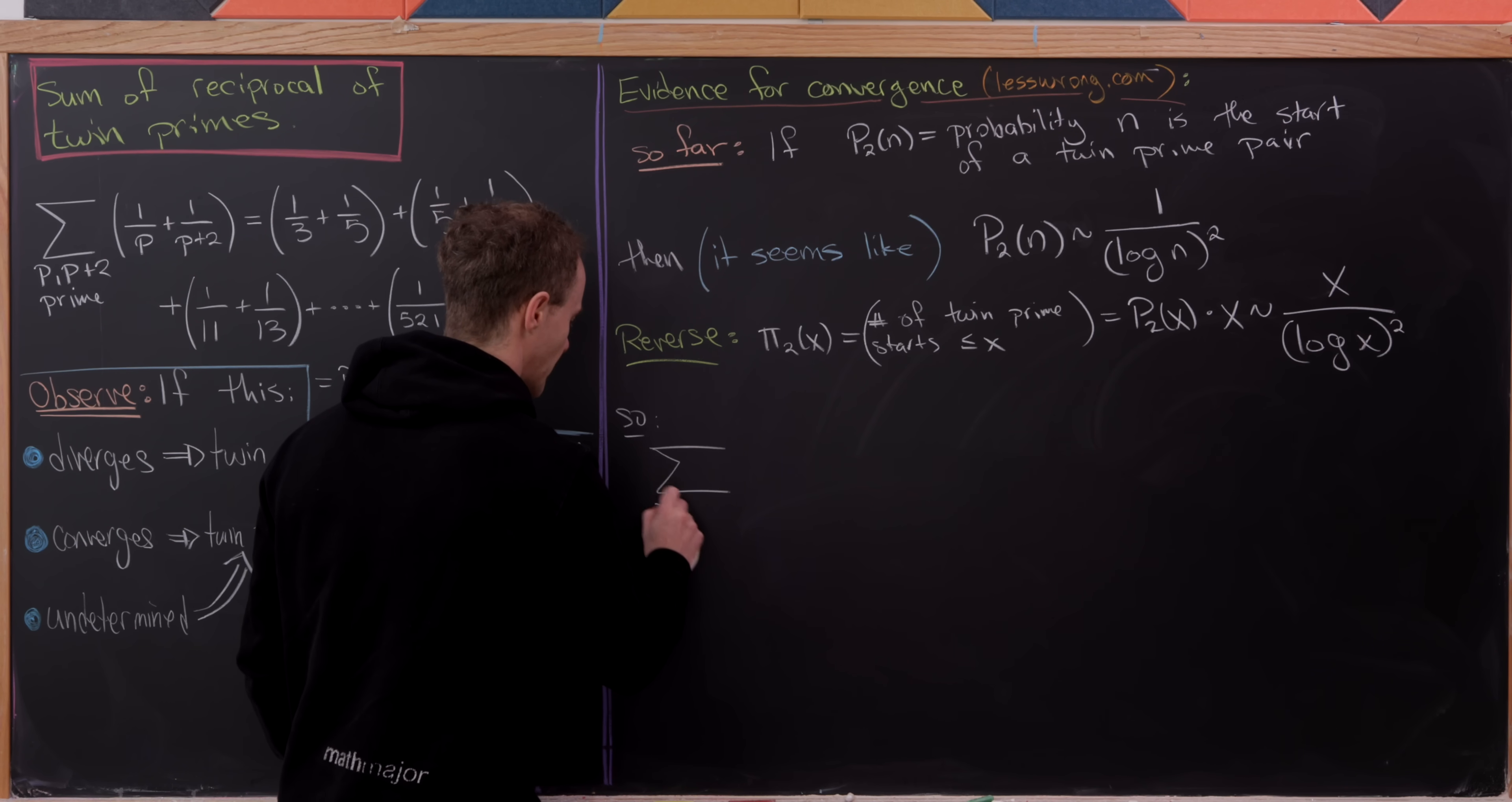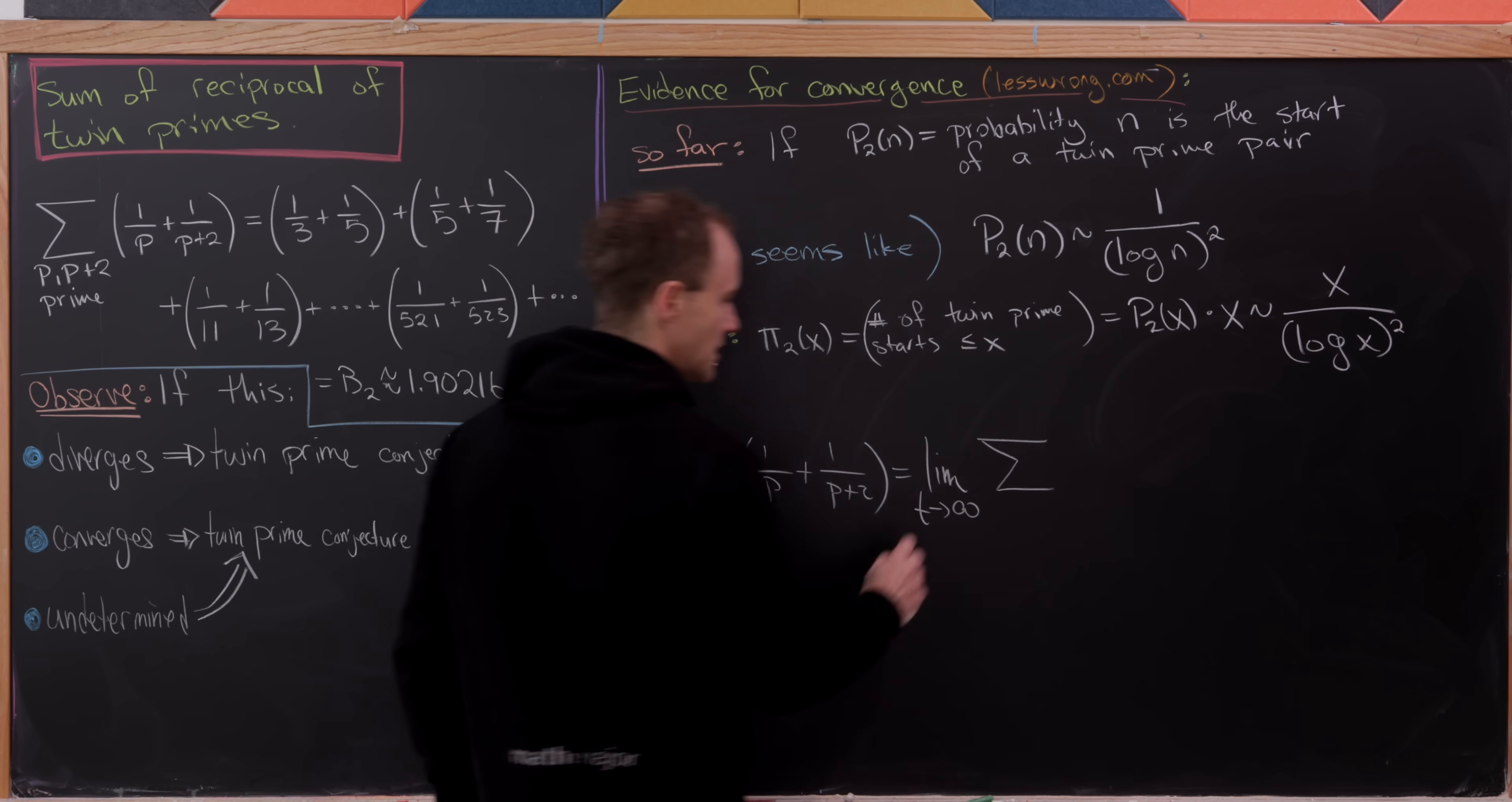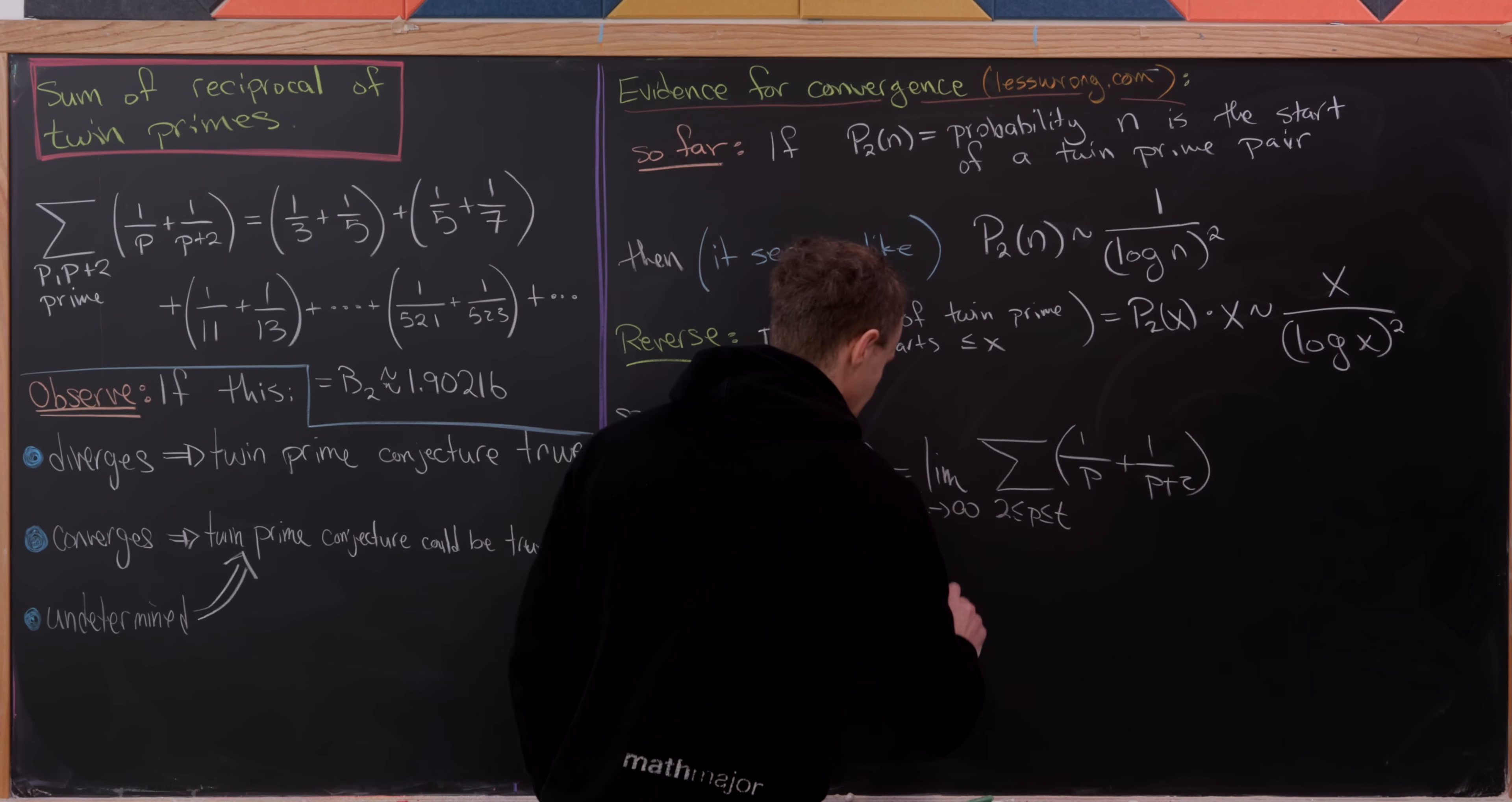So that means we have the following. We've got this sum over all numbers p, p plus 2, where p is prime of 1 over p plus 1 over p plus 2 is equal to, I'm going to write this as the limit as t goes to infinity of this same sum. I won't write all of these details, but these rules still hold. But now we're just assuming that this p runs between 0 and t, then we've got 1 over p plus 1 over p plus 2. So this is like writing a sum as the limit of partial sums.